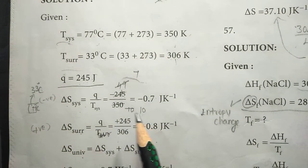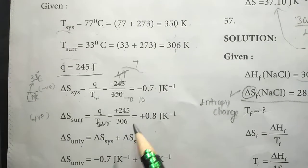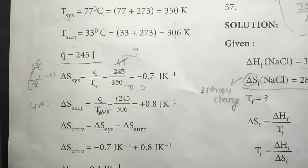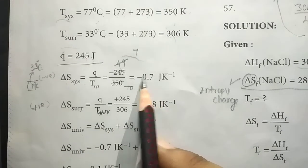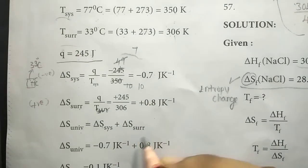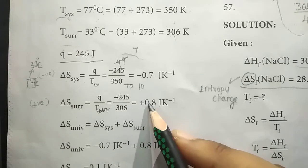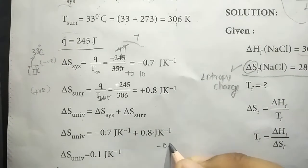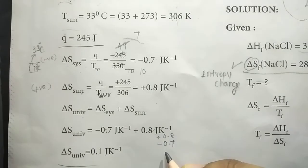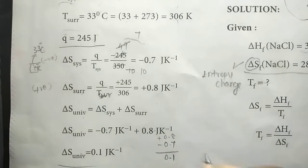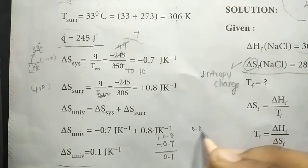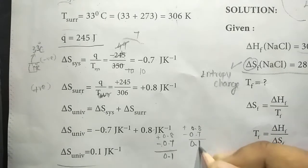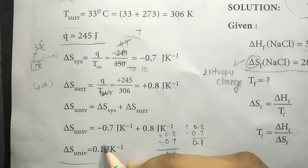Now the next part is the universe. Entropy change of the universe equals entropy change of system plus entropy change of surrounding. That is minus 0.7 J per Kelvin plus 0.8 J per Kelvin. We subtract the smaller from the larger: 0.8 minus 0.7 equals 0.1 J per Kelvin. So entropy change of the universe is plus 0.1 J per Kelvin.